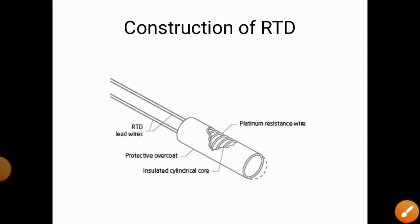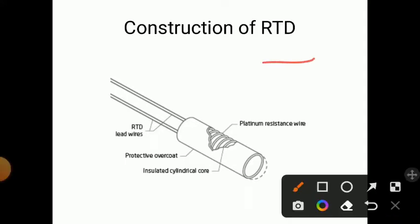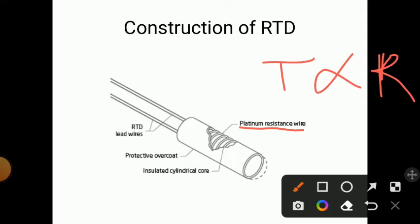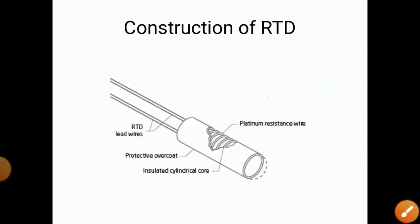The principle of RTD is: as temperature increases, resistance also increases — temperature is directly proportional to R. This platinum resistance wire already has some resistance like 100 ohm or 120 ohm; that is its fixed resistance. But as temperature increases, this resistance also increases. So input is temperature change and output is change in resistance, which is measured between the two wires.